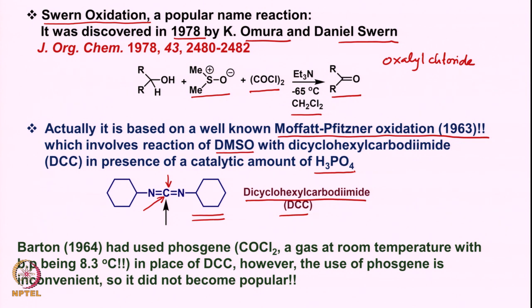This was discovered in 1963, and based on this the oxidations of alcohols were reported. Subsequently in 1964, Barton reported the use of phosgene — a gas at room temperature with boiling point 8.3 °C — in place of DCC. However, the use of phosgene is not very convenient, and therefore this reaction did not become very popular. But the Moffatt-Pfitzner oxidation was carried out by many people in their oxidation work.